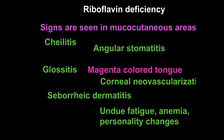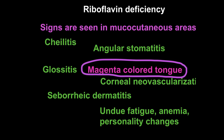Key mucocutaneous signs include chelitis — cracking and inflammation of the lips — and angular stomatitis, which is inflammation at the angles of the mouth. Inflammation of the mouth itself can also be seen. Inflammation of the tongue is referred to as glossitis, and the tongue has a characteristic magenta color. This magenta colored tongue is one of the important signs associated with riboflavin deficiency.